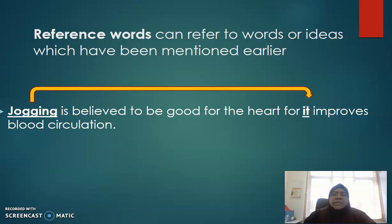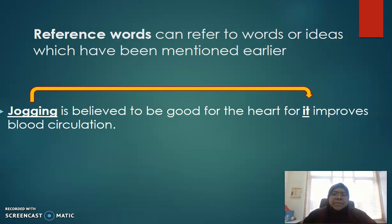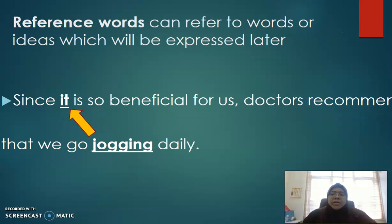Reference words can refer to words or ideas which have been mentioned earlier. For example: 'Jogging is believed to be good for the heart, for it improves blood circulation.' You can see here that the word 'it' refers to the word 'jogging' — 'it' refers to 'jogging' because jogging is mentioned earlier.